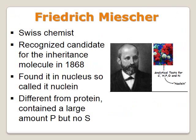Frederick Miescher, who was a Swiss chemist, recognized early on and discovered what he called the Nuclein. This was a molecule found in the nucleus, and he thought it would be a good candidate as the molecule of inheritance. This molecule had carbon, hydrogen, phosphate, oxygen, and nitrogen.